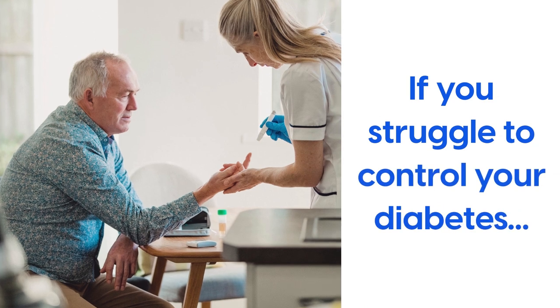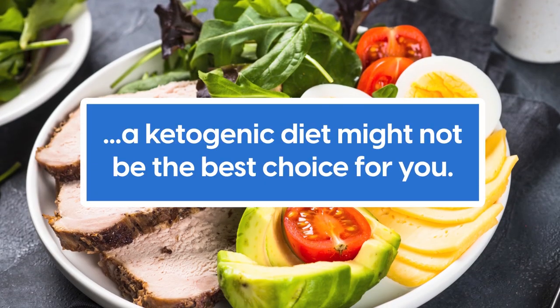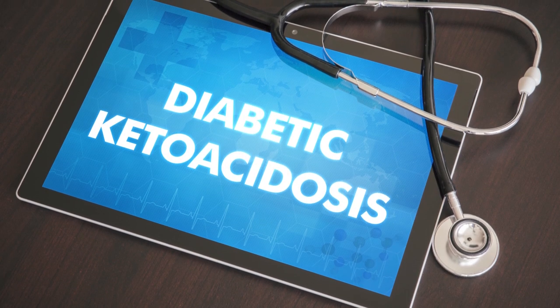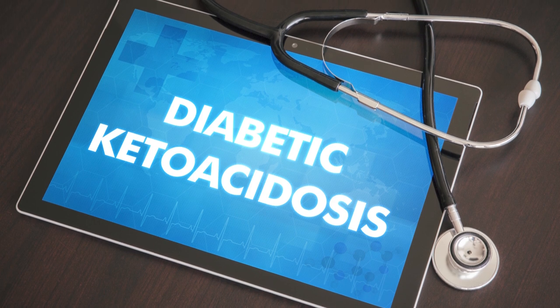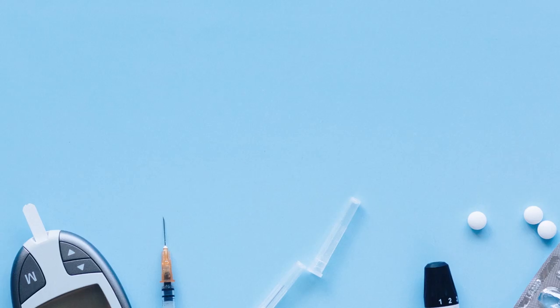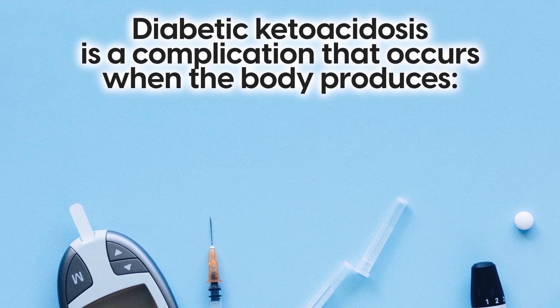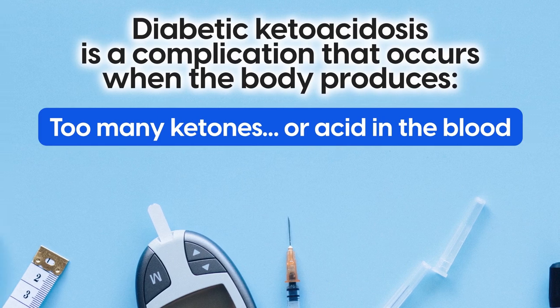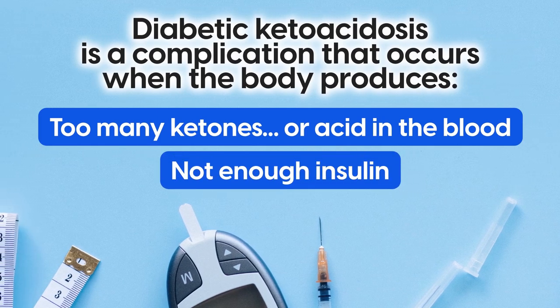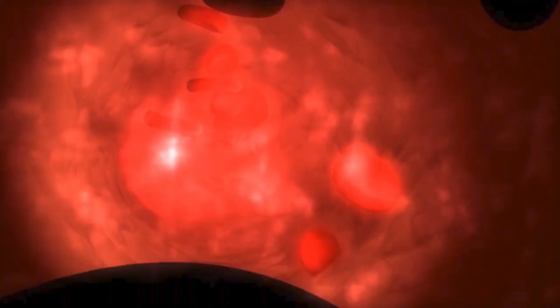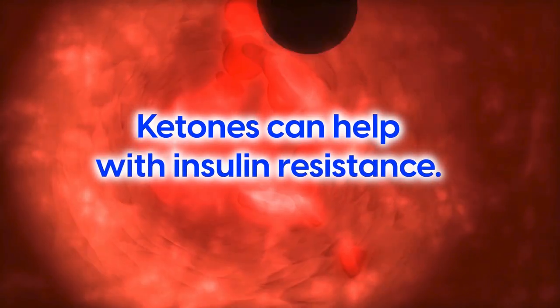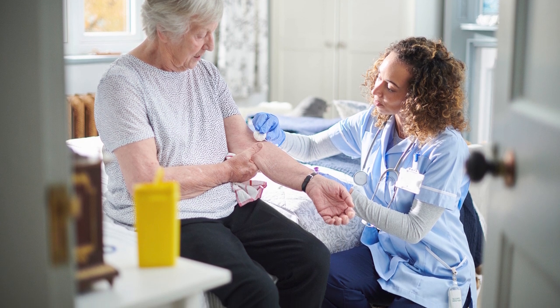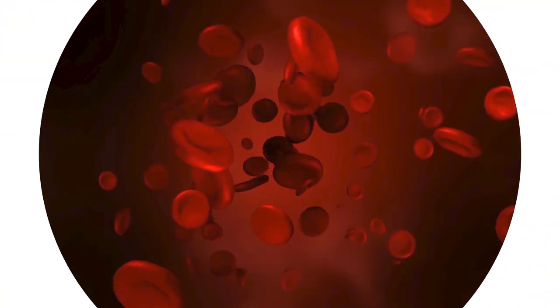If you struggle to control your diabetes, a ketogenic diet might not be the best choice for you. And one of the main reasons is because a keto diet can lead to diabetic ketoacidosis. Diabetic ketoacidosis is a complication that occurs when the body produces too many ketones, or acid in the blood, and not enough insulin. And yes, we've seen that ketones can help with insulin resistance. However, the body still needs enough insulin to maintain a healthy metabolism.